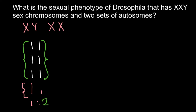Whenever the number of X chromosomes is less than the number of sets of autosomes, the phenotype is male. For example, if we add a Y chromosome, it doesn't affect the ratio — we only count X chromosomes — so this would be a fertile male. If instead we have two X chromosomes, the ratio would be two to two. When the number of X chromosomes equals the number of autosome sets, the phenotype is female.